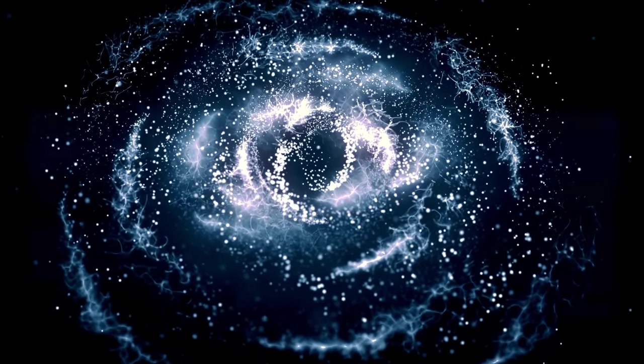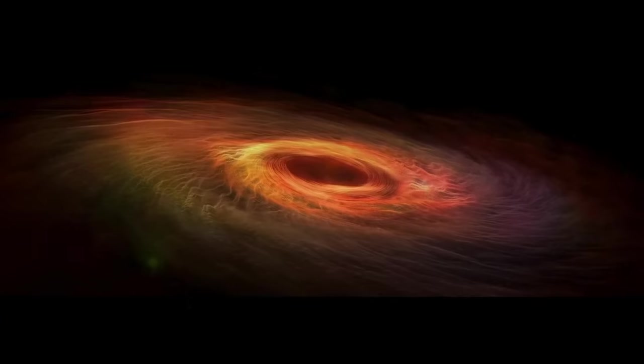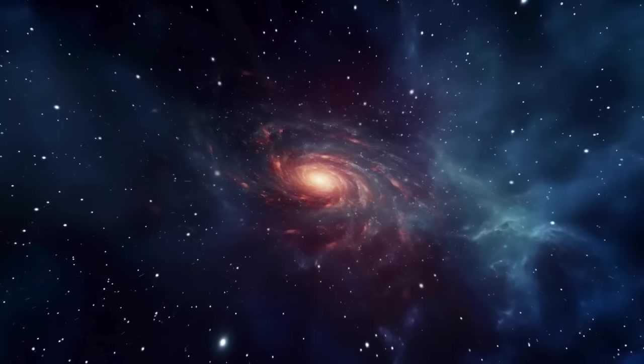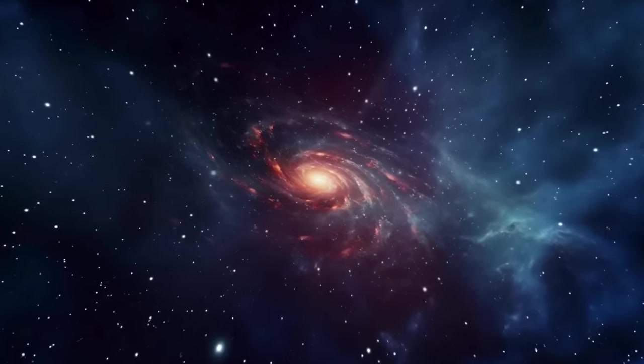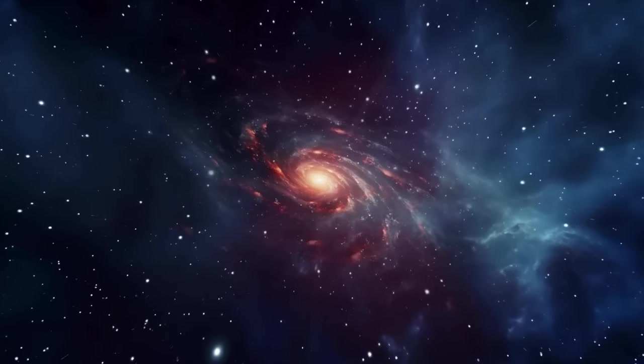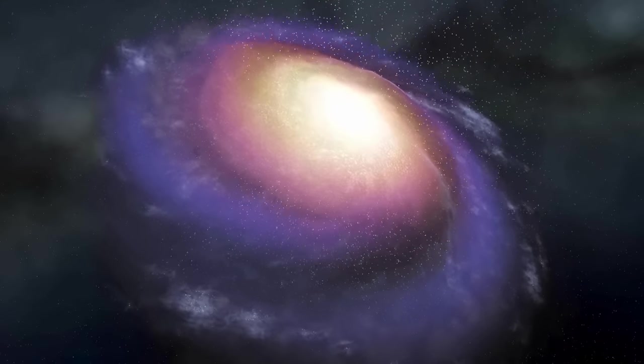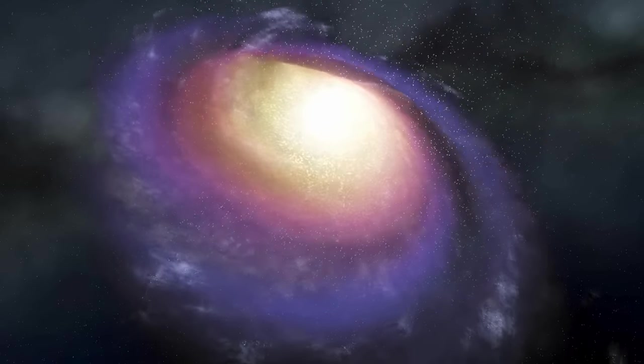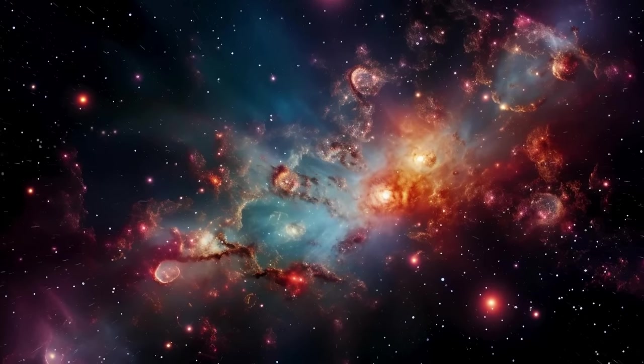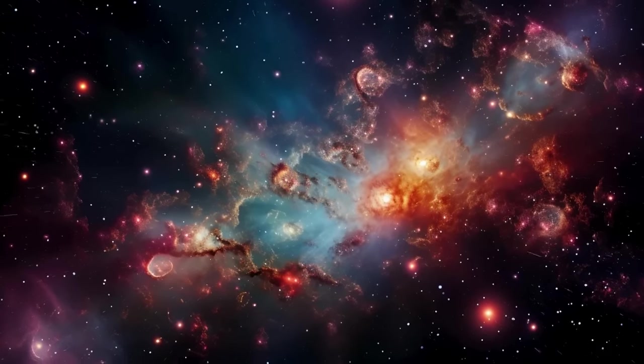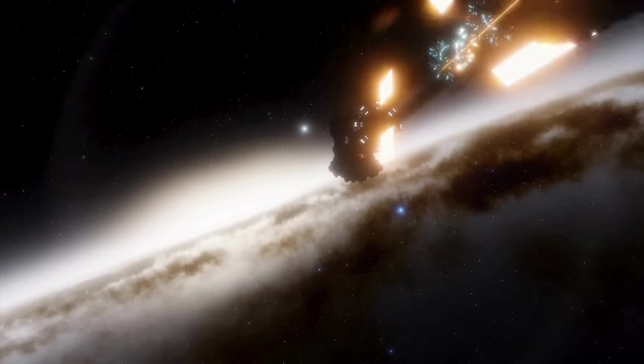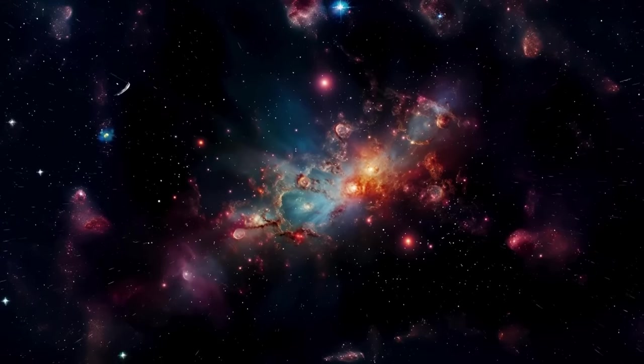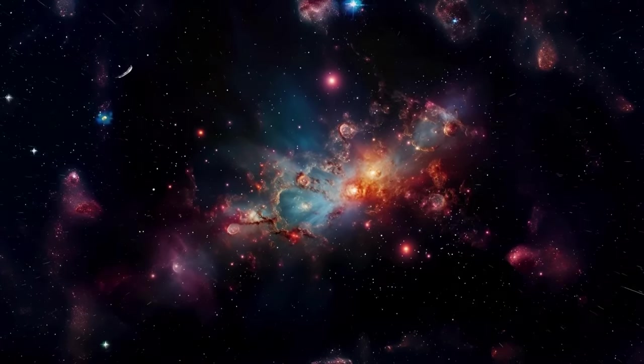Within our big old observable universe bubble, there's loads going on. There are at least 2 trillion galaxies, and each one is home to billions or even trillions of stars, plus planets and other objects. And it's not just about the things we can see like stars and galaxies. There's a whole lot of stuff we can't see directly, but we know it's there. Stuff like dark matter, which is this mysterious substance that we can't see or touch, but we know it's there because of the way galaxies move.